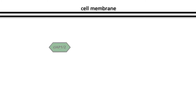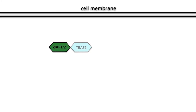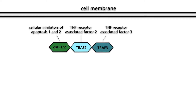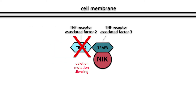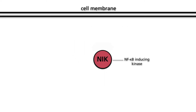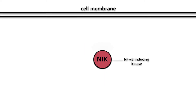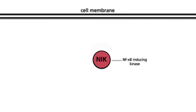The following mechanisms that activate NIK constitutively in myelomas have been described: deletion of genes coding for cellular inhibitors of apoptosis; deletion, mutation, or silencing of either the TRAF2 or TRAF3 gene; and amplification of the MAP3K14 gene, which encodes NIK.